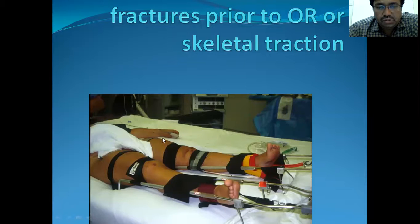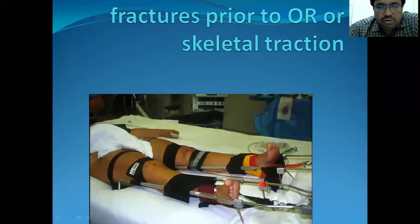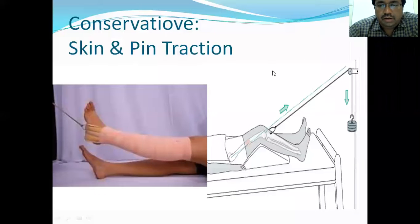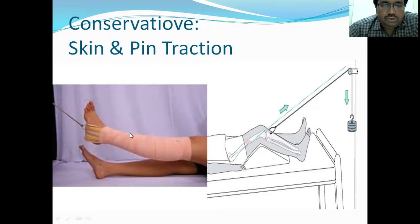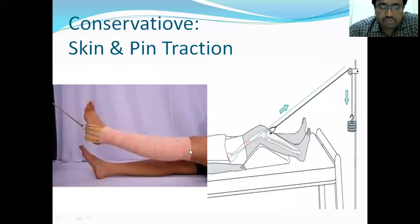After stabilizing, we should always check the vitals, because there is significant blood loss with long bone fractures — femur, pelvis, and tibia. We stabilize the fracture and put the patient on a splint or traction. After evaluation, we can put the patient on skin traction or pin traction, decided based on the age of the patient, whether surgery is desired, and whether the patient is fit for surgery.